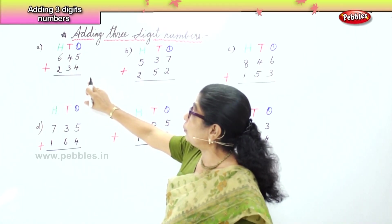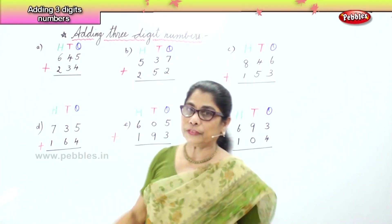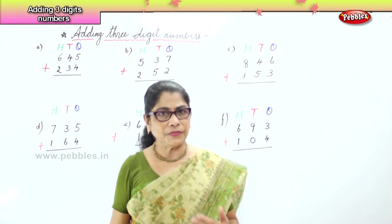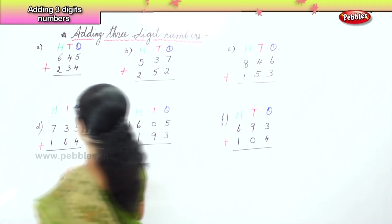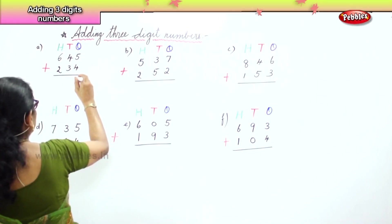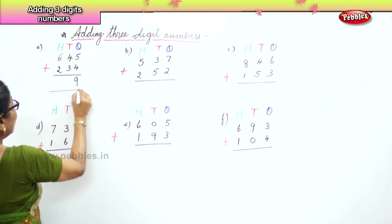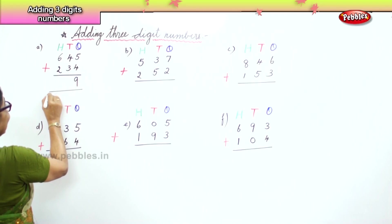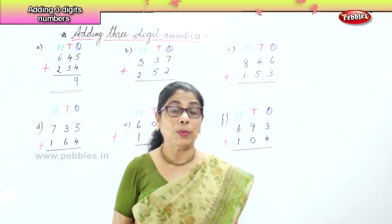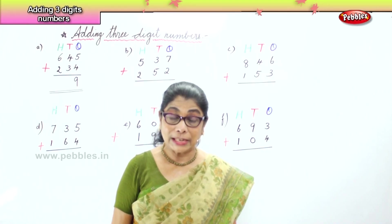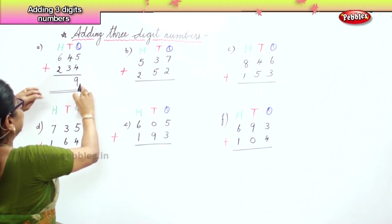The first sum: in the ones place you have five ones plus four ones. What is five plus four? Five plus four is nine. So you can safely put nine in the ones place — nine ones. You cannot have ten ones in the ones place because then it becomes one ten.